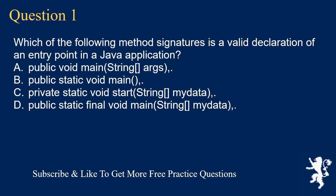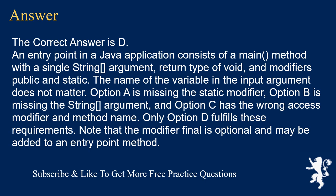Question 1: Which of the following method signatures is a valid declaration of an entry point in a Java application? A) public void main(String args), B) public static void main(), C) private static void start(String data), D) public static final void main(String data). The correct answer is D. An entry point consists of a main method with a single String argument, return type void, and modifiers public and static. The variable name in the argument does not matter. Option A is missing the static modifier, option B is missing the String argument, and option C has the wrong access modifier and method name. Only option D fulfills these requirements.